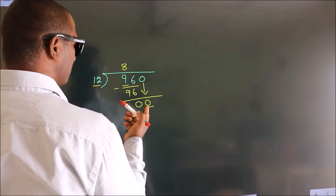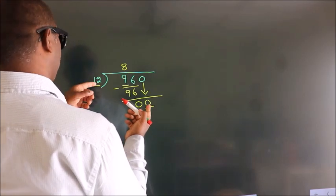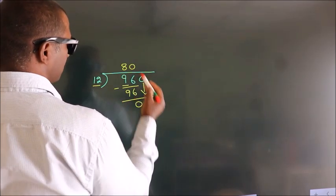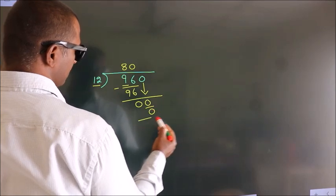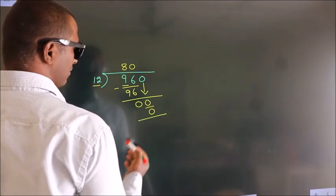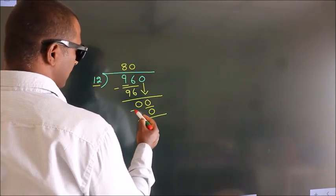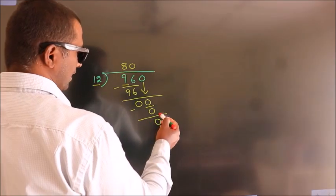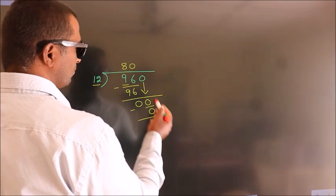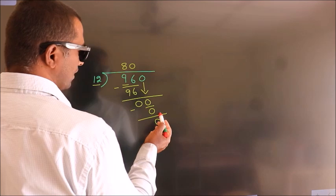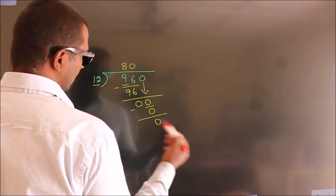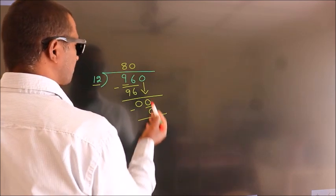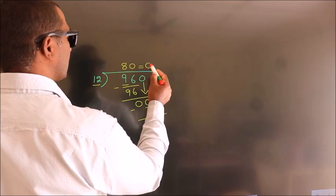When do we get 0 in the 12 table? 12 times 0 is 0. Now we subtract, we get 0. After this, there are no more numbers to bring down. We got remainder 0. So this is our quotient.